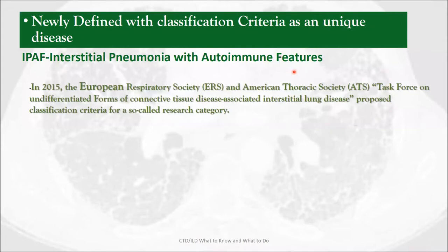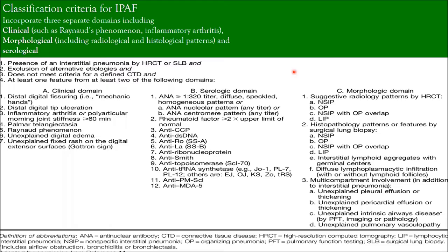They proposed classification criteria for interstitial pneumonia with autoimmune features with three domains: clinical domain, serological domain, and morphologic domain. To make the diagnosis, at least one feature from two different domains is needed. After that, the behavior of this disease entity shows unique features.